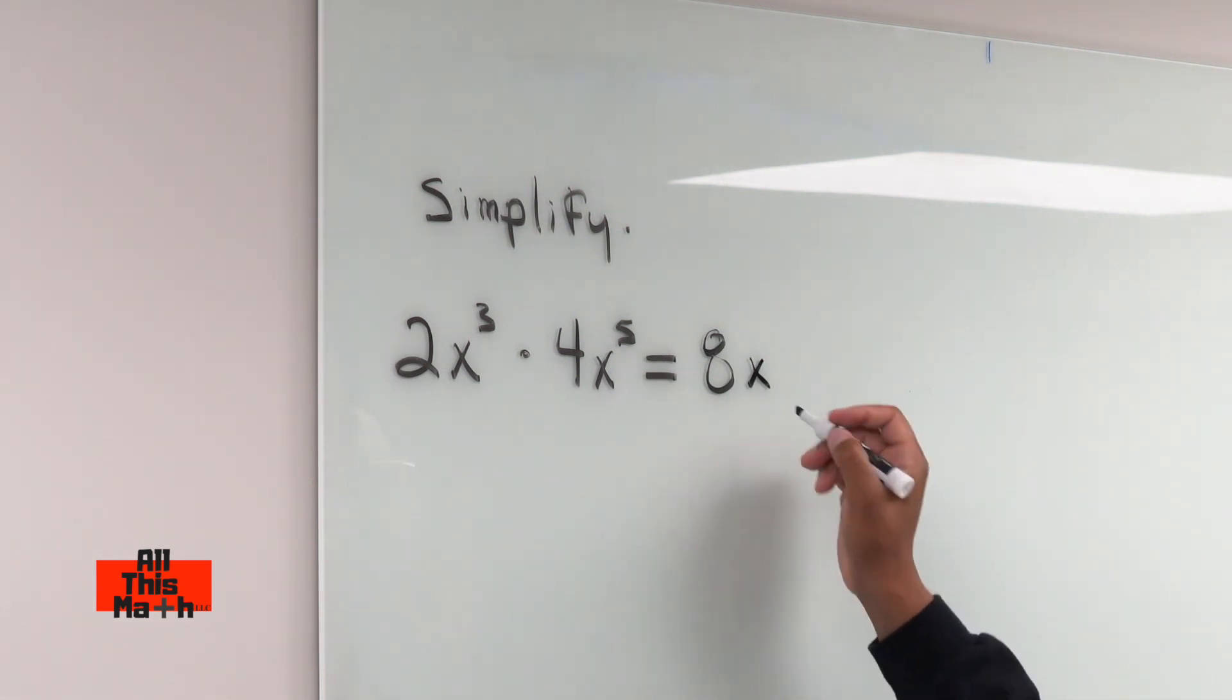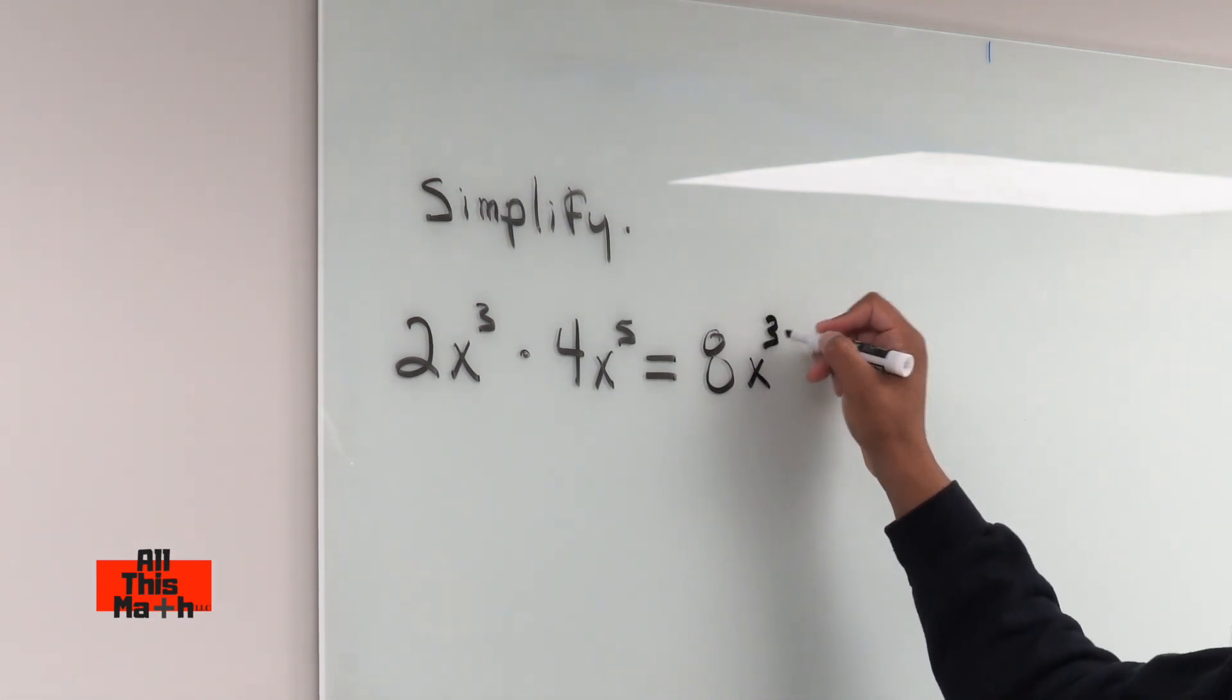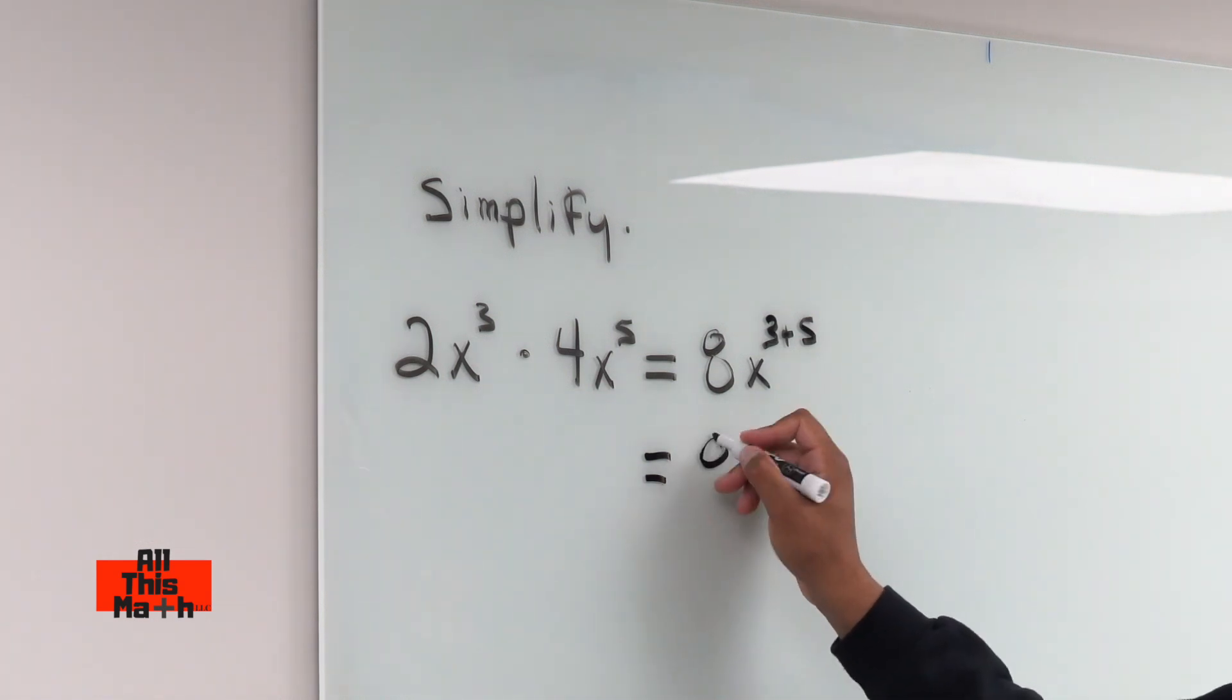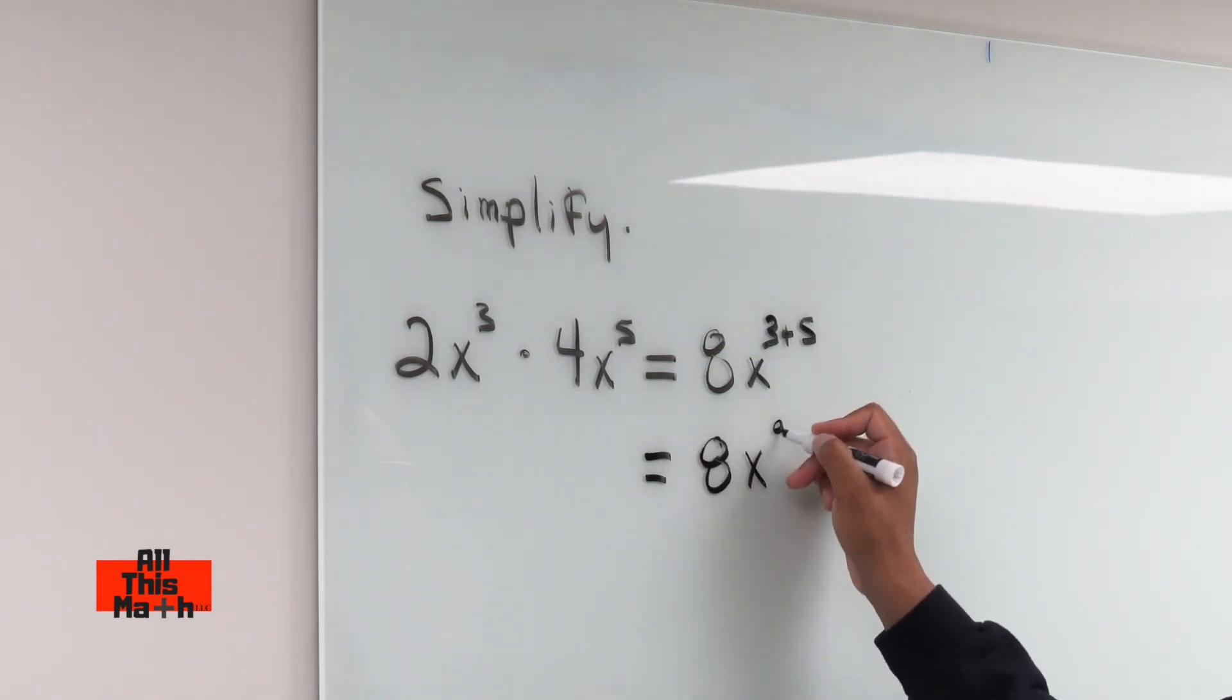So this can be rewritten as 8x to the 3 plus 5 power. And then in the next step, you're going to actually add 3 plus 5, which is 8, and then you're going to have 8x to the 8th power. And that is the final answer.